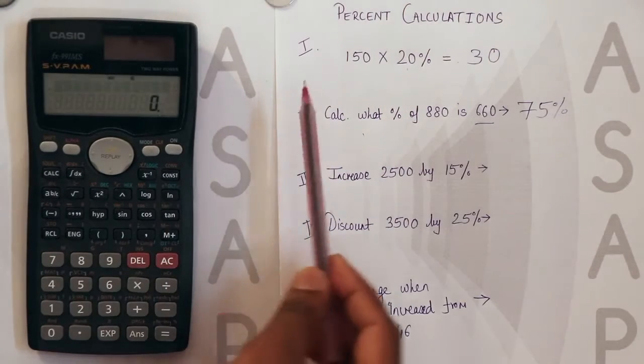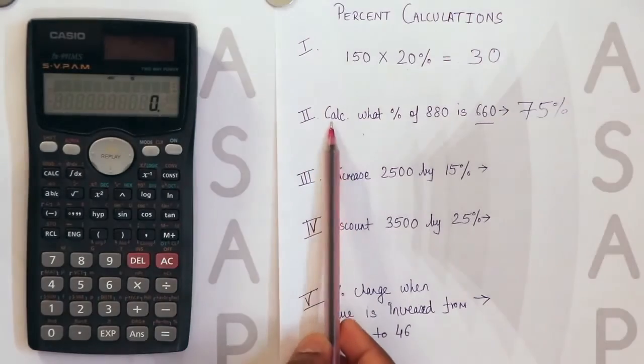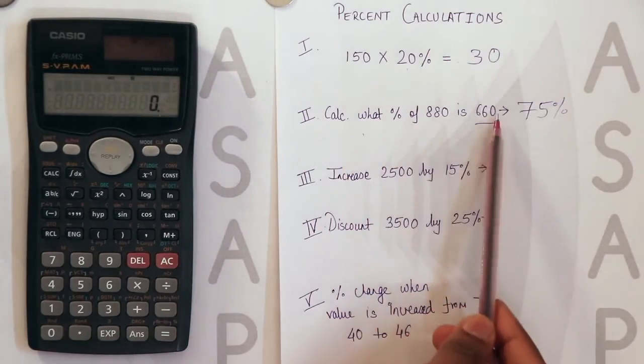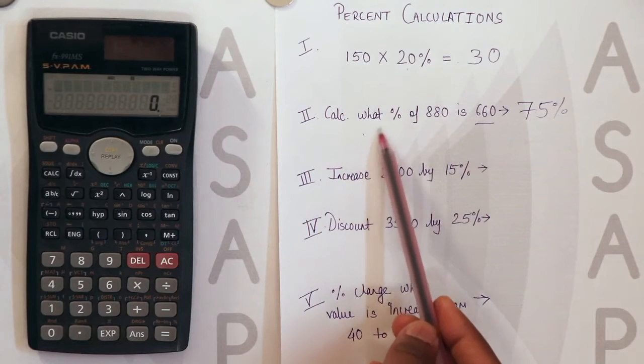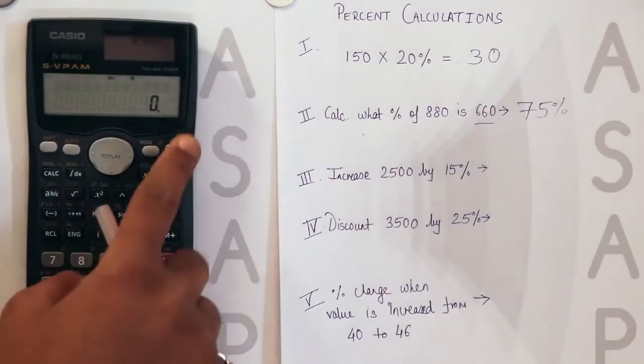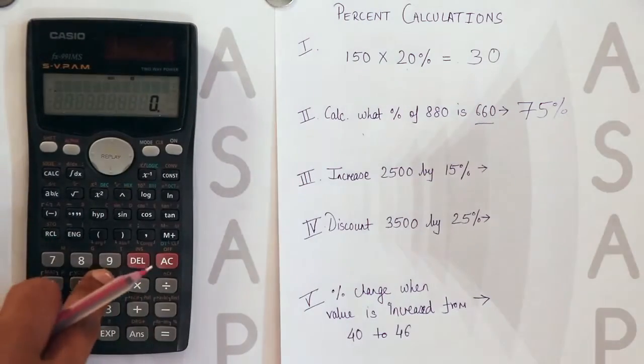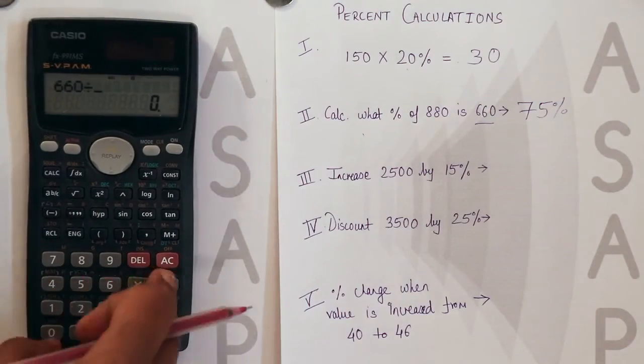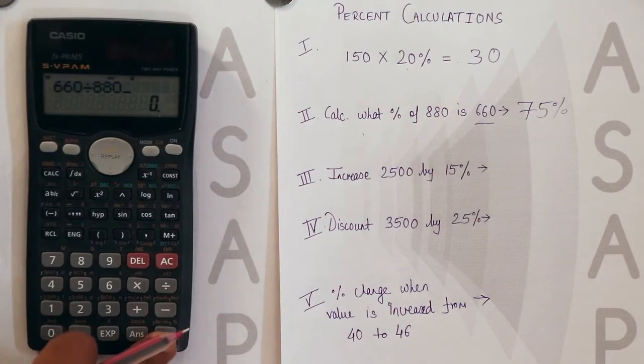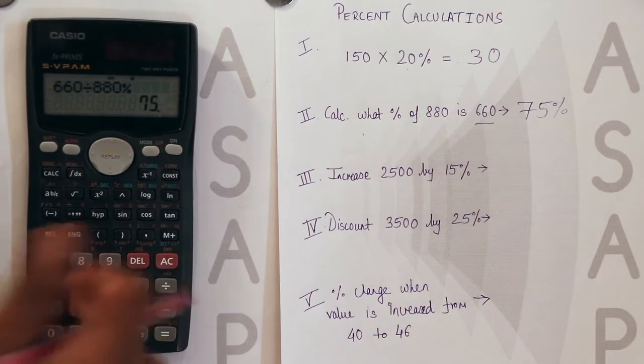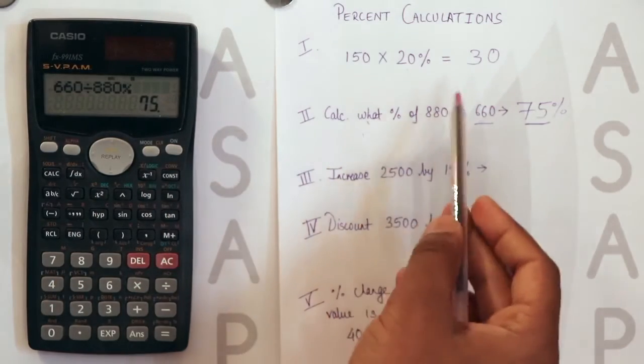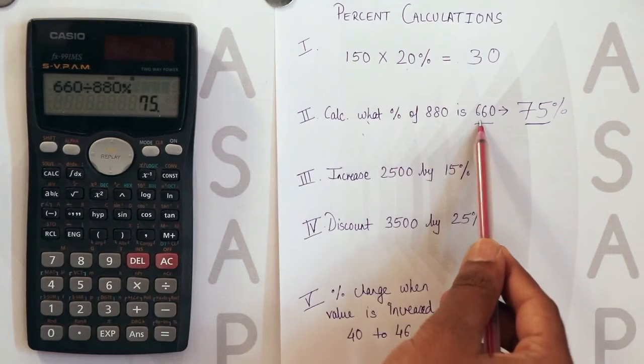The second type of problem is when we need to calculate what percentage of a value is something. Here we have the example: what percentage of 880 is 660? Simple step: the answer, that is 660, divided by 880, then press the shift button and the percent equal to sign. The answer you get is 75%. So 75% of 880 is 660.